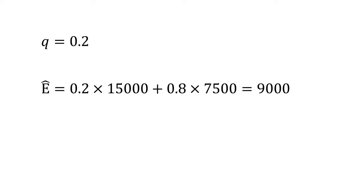Suppose that Q equals 0.2. That is, only 20% of the cars are good. Suppose the cursed buyer believes that all cars are sold with equal probability regardless of type. In that case, the expected value of a car to a buyer is 0.2 times 15,000 plus 0.8 times 7,500, which equals 9,000.